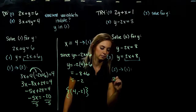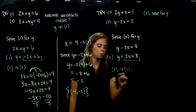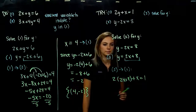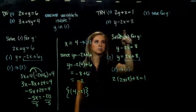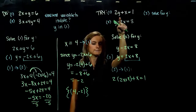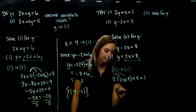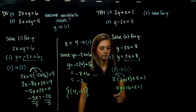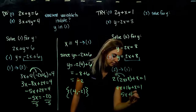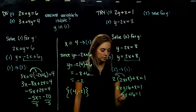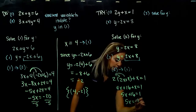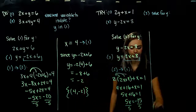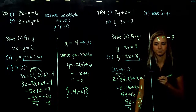Into equation 1: 2 times (2x plus 8) plus another x equals 1. Distributing in: 4x plus 16 plus x equals 1. Combining like terms: 5x's together. To get x alone, subtract 16 from both sides, giving 5x equals negative 15. So x equals negative 3.